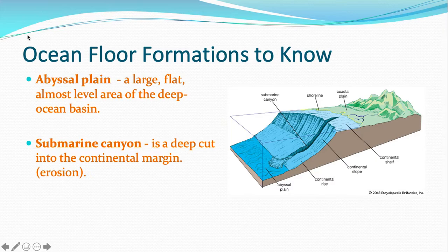The abyssal plain is just a large, flat, almost level area of the deep ocean basin. I don't have a formation method for that because the abyssal plain is sort of like the absence of any formation. A submarine canyon, which you can see in the diagram here, is a deep cut into the continental margin, and that's formed by erosion, usually a river. So most formations are formed by either plate tectonics or erosion, or some combination of the two.